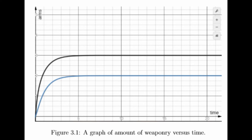The graph shows that the expenditure of both countries is drastically increasing at the beginning of the time before it enters a steady state, which means that both countries spend more at the beginning, and when they have already enough arms, they only spend a steady amount of money over time.